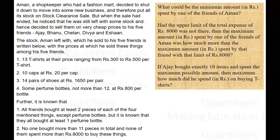Now, every friend has bought at least two pieces out of the given items, but not of the perfume bottles. It is given that at least one perfume bottle was bought by every friend, and no one bought more than 11 pieces in total. None of them have spent more than 8000 rupees. The first question asks: what could be the minimum amount spent by one of the friends of Aman?